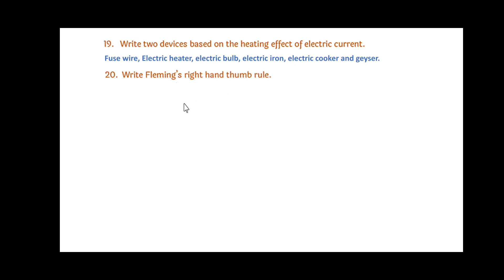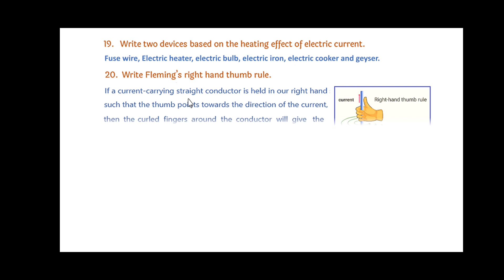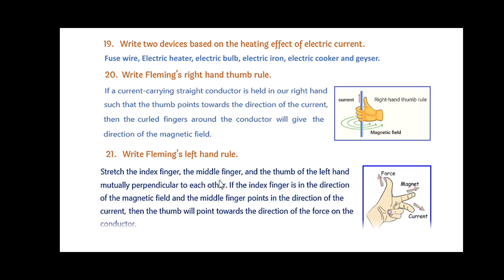Write Fleming's right hand thumb rule. If a current carrying straight conductor is held in your right hand such that the thumb points towards the direction of the current, then the coil fingers around the conductor will give you the direction of the magnetic field. In the adjoining figure you can see this statement. Write Fleming's left hand rule. Stretch the index finger, the middle finger, and the thumb of the left hand mutually perpendicular to each other. If the index finger is in the direction of the magnetic field, the middle finger points in the direction of the current, then the thumb will point towards the direction of the force of the conductor.